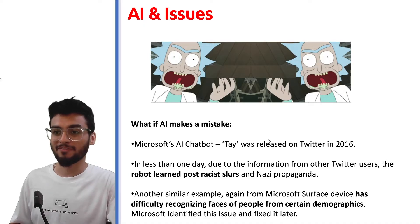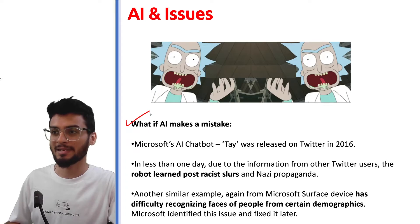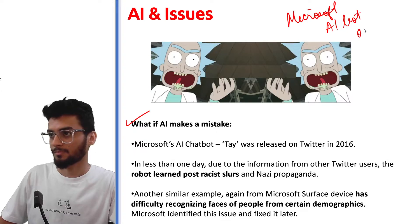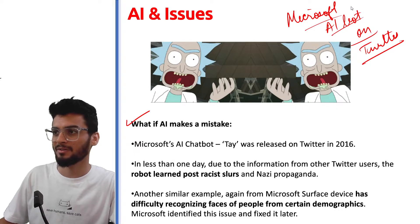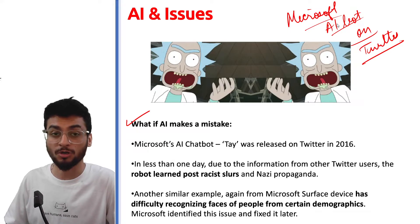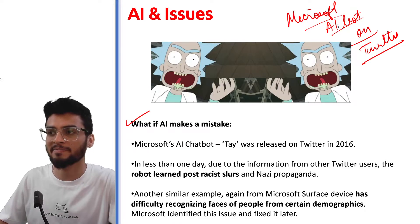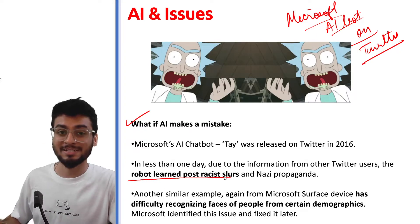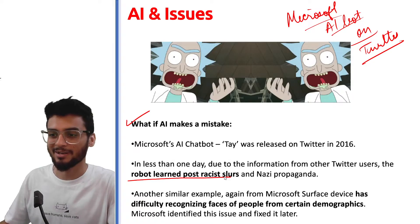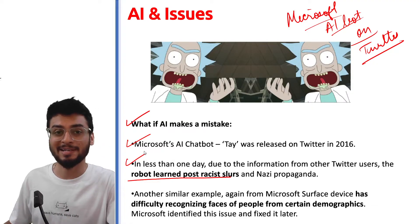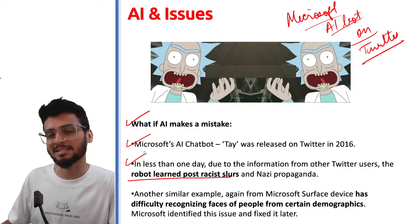The third issue is: what if an AI makes a mistake? For this, there was a simple example where Microsoft created an AI bot on Twitter. What happened was this AI bot was taking data from other Twitter users. Some people on Twitter talk about nice things and some are racist and talk about negative things. So this AI bot started training on all that data, and in the end the bot learned to post racist comments and bad things on Twitter. These kinds of mistakes can generally happen when your AI is trained on biased data.